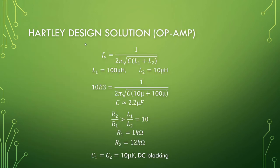For Hartley design solution using op-amp, if inductor 1 is 100 microhenries and inductor 2 is 10 microhenries, the capacitor will be 2.2 microfarads. The inductor ratio is 10, which means our gain should be larger than 10, so 12k and 1k should do here.